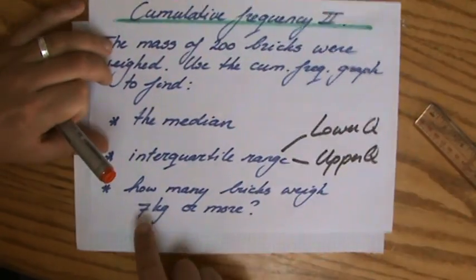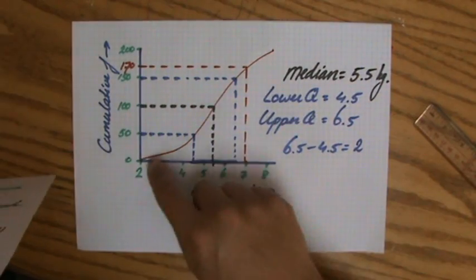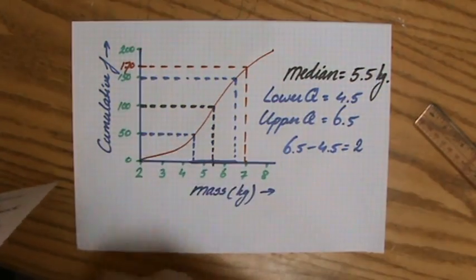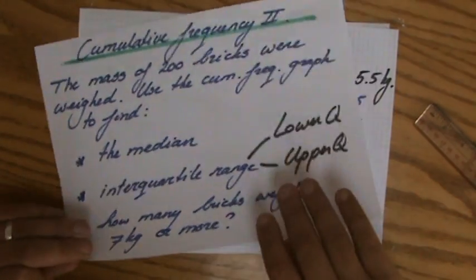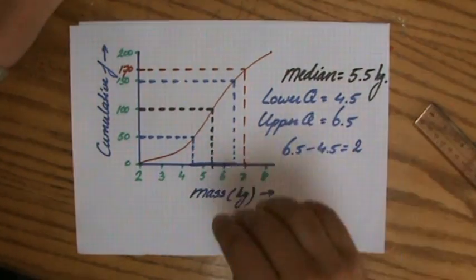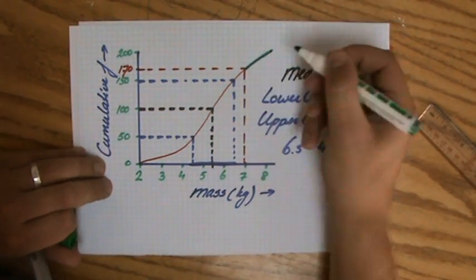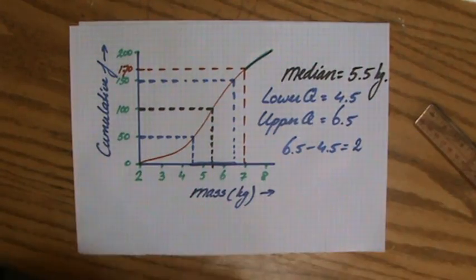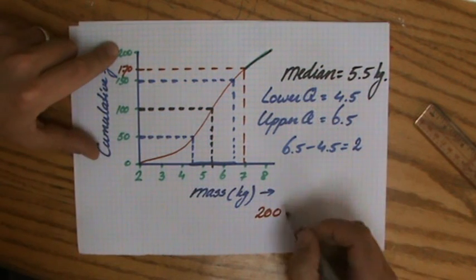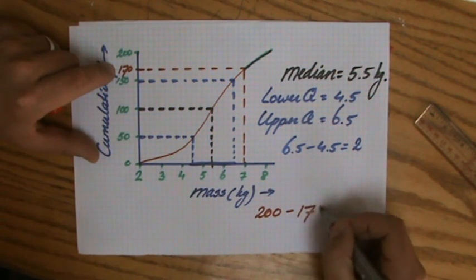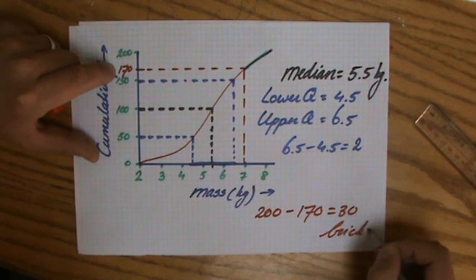So if they ask me how many bricks weigh 7 kilos or less, I would say well 170. But now they ask me how many bricks weigh 7 kilos or more. So I'm actually really looking at the top values, the heaviest bricks, so only these values. So how many bricks is that? That will be then 200, total amount of bricks, take away 170. So the answer will be 30 bricks.